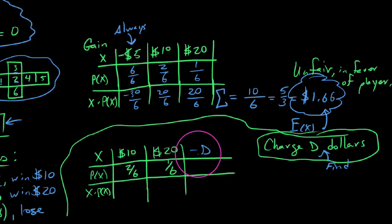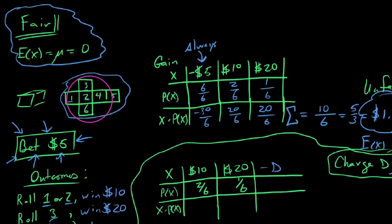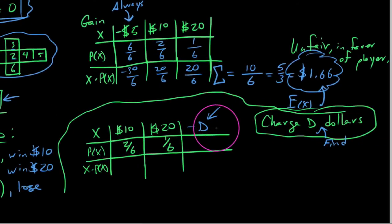In order to find this, what we're going to say is we'll construct our probability distribution, find the average, but we're going to, in order to make this fair, set our average equal to 0 and then solve for what D should be in order to make this true. We say, well, what's the likelihood that I lose this D dollars? And again, we still say 6 out of 6 times I'm going to lose this D dollars.